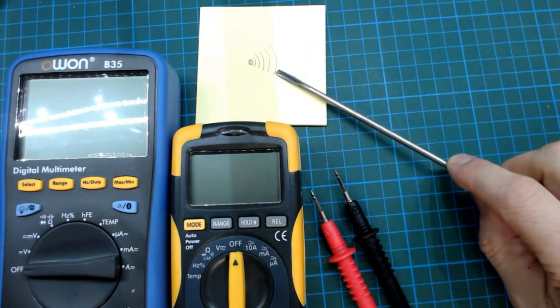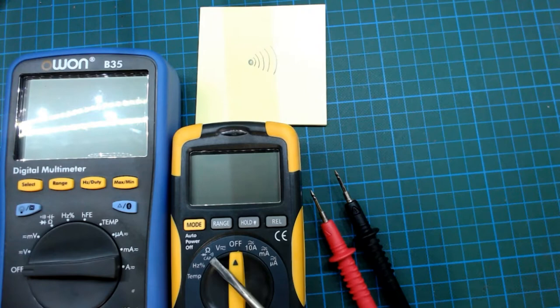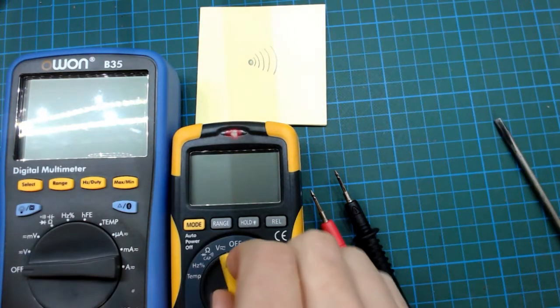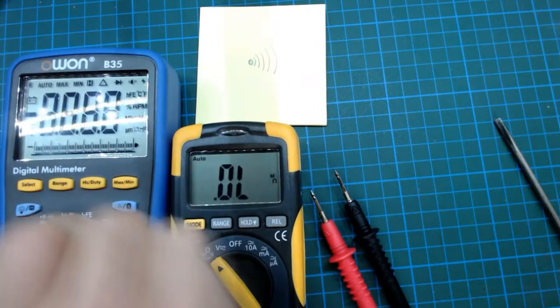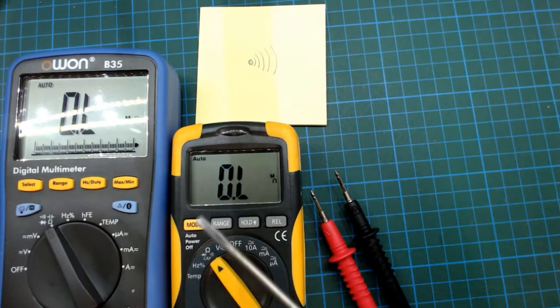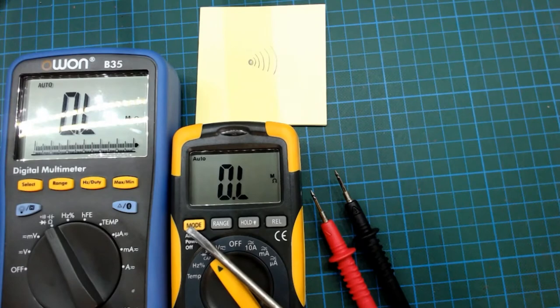To set your multimeter you're looking for this symbol. It could be a bit different on your multimeter but it's normally something like this. Once you set the dial to the right setting you normally have to use the select or mode button to change between these settings here.